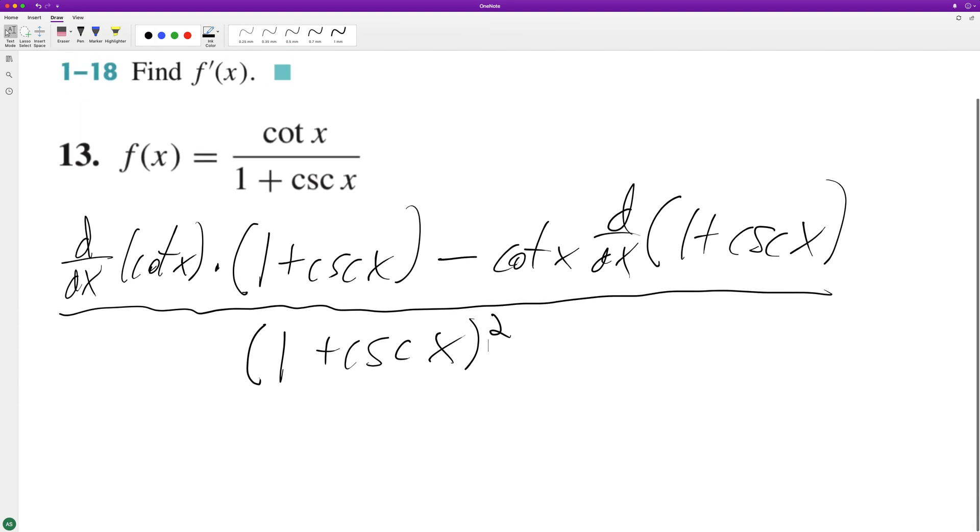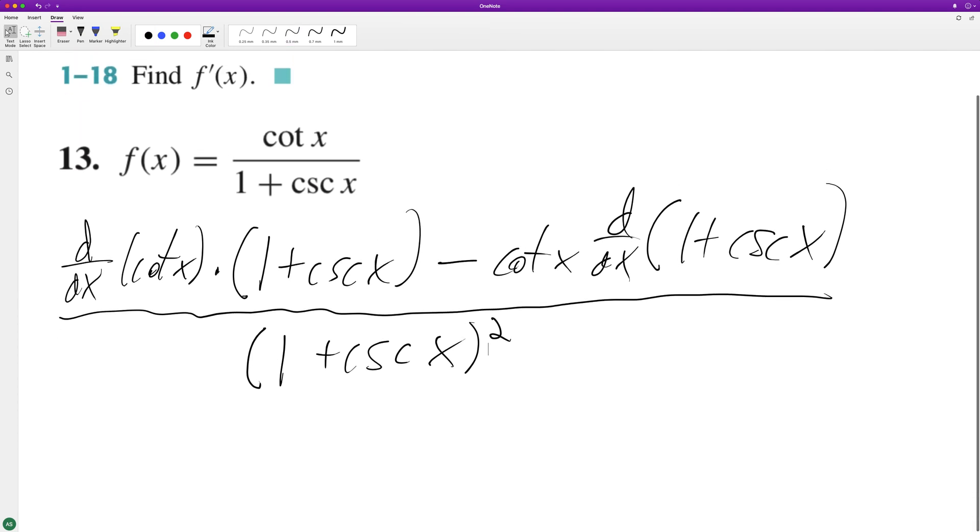The derivative of cotangent is negative cosecant squared, so we get negative cosecant squared x times 1 plus cosecant x minus. And then the derivative of 1 plus cosecant: the derivative of cosecant is negative cosecant cotangent.